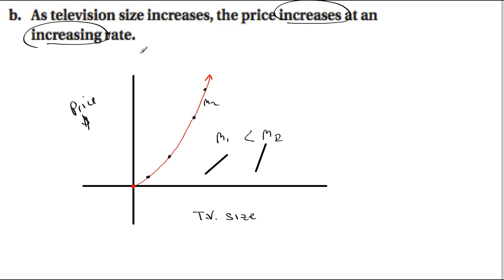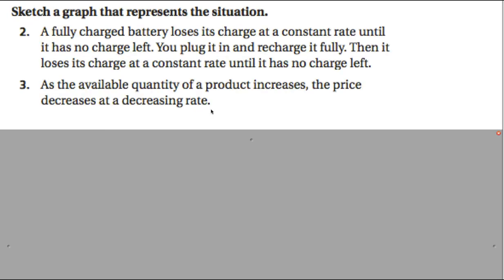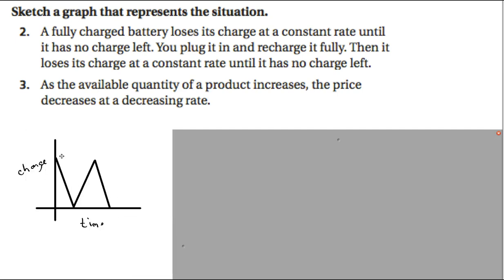Quick example: a fully charged battery loses its charge at a constant rate until it has no charge left. You plug it in and it recharges fully, then loses charge again. Start at full charge, decrease linearly to zero, then jump back up to full charge as it recharges, then decrease linearly to zero again at a constant rate.